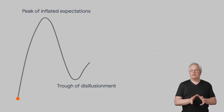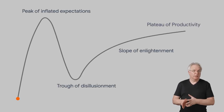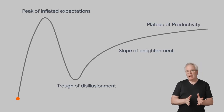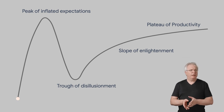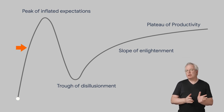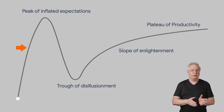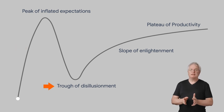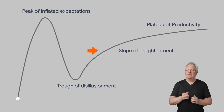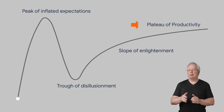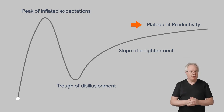In the previous episode, we looked at the concept of a hype cycle and where AI is on the hype cycle right now. And that's namely here, where we have to go past the peak of inflated expectations, through the trough of disillusionment, up the slope of enlightenment, to get to the plateau of productivity.